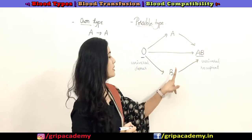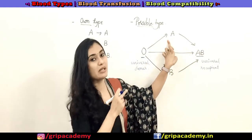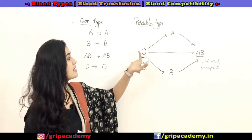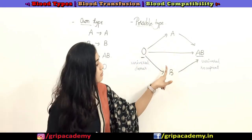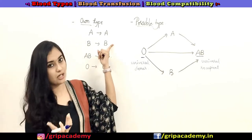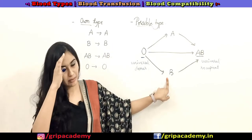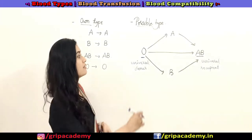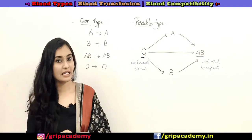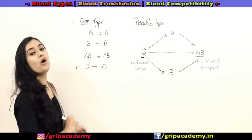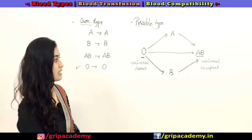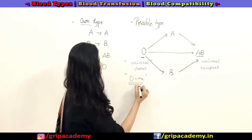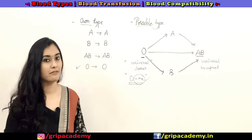For A blood group people, they can receive blood from their own type (A to A) and from O blood group. For B blood group people, they can receive from B blood group or from O blood group. For O blood group people, only O blood group people can donate blood to them. We call O negative people universal donors specifically — not O positive — so now we will discuss what this positive and negative means.